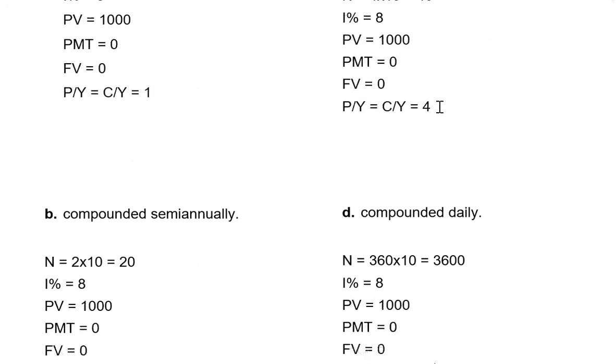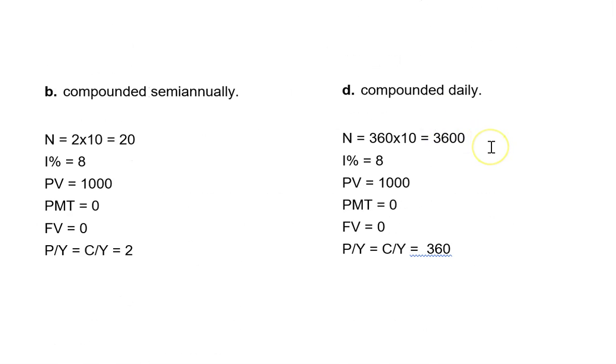So finally, daily compoundment for a total of 3,600 compounding periods. Everything else except for the P/Y, C/Y remaining constant and the P/Y, C/Y, of course, become 360. And when I solve, I do indeed get $2,225.34.